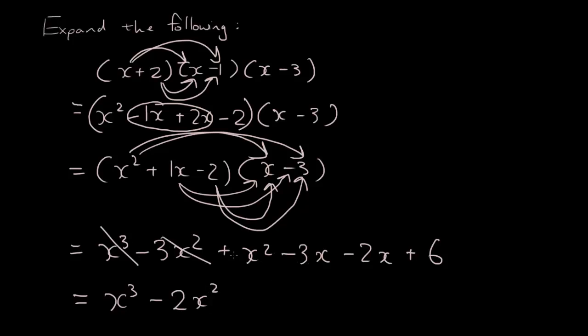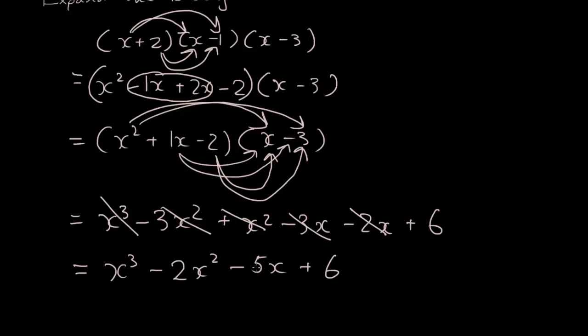Minus 3 minus 2 is minus 5x, and I have plus 6 in the end. So that is the expanded result.